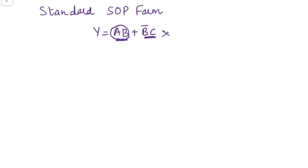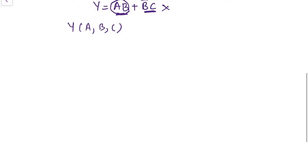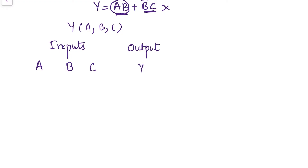The variables in a product term represent a single row in the truth table such that on evaluating the expression for that row, its value is always 1. Variables that are 0 are written in complemented form, while variables that are 1 are written in their true form. Let's write the SOP terms for a three-variable function where Y is a function of A, B, C. With three inputs there are eight possible combinations, and there is a single output Y. Let's write the SOP expression corresponding to each combination.